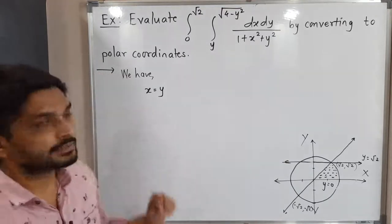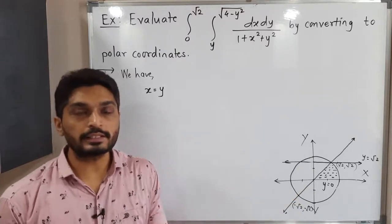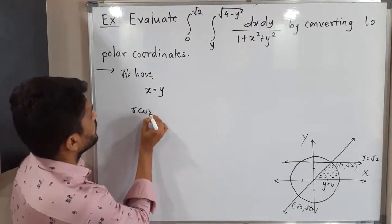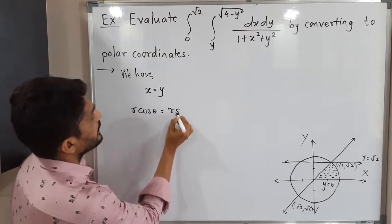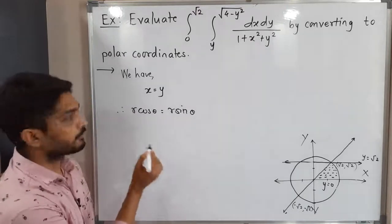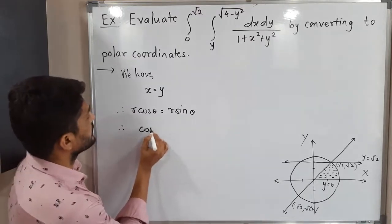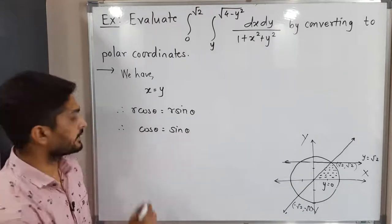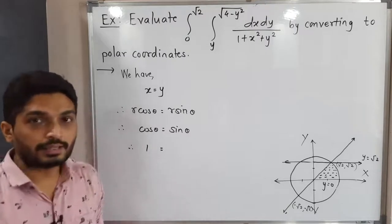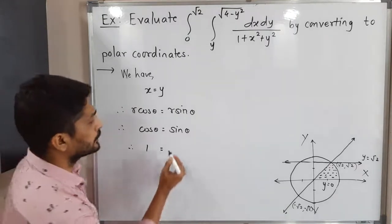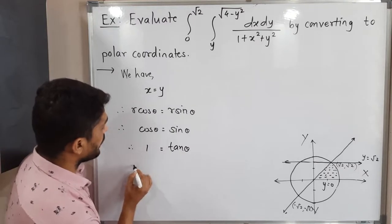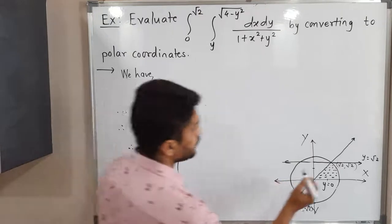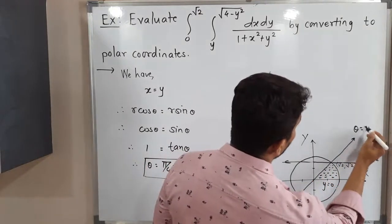Now we convert the equations of the curves into polar coordinates. For the first curve, x equals y: substituting x equals r cos θ and y equals r sin θ, we can cancel r from both sides to get cos θ equals sin θ. Shifting cos θ gives 1 equals tan θ, so tan θ equals 1, meaning θ equals π/4. The polar equation of this line is θ equals π/4.